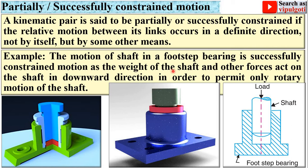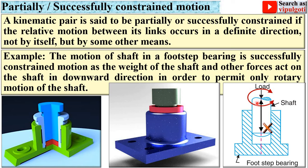Why is it successfully constrained? Because the weight of the shaft and other forces — generally gravitational force — act on the shaft in the downward direction in order to permit only rotary motion. Due to this load, it cannot move in the vertical direction; this motion is automatically prevented. That's why it is called successfully constrained motion. Only rotational motion is possible, and so the degree of freedom is once again 1.